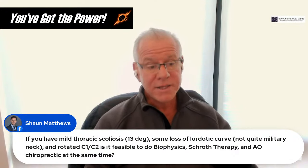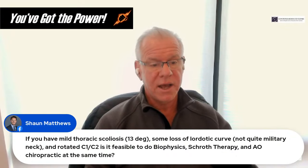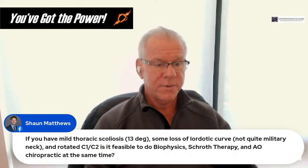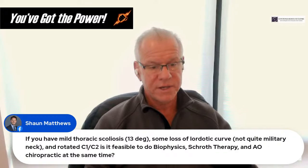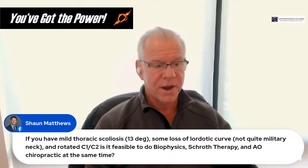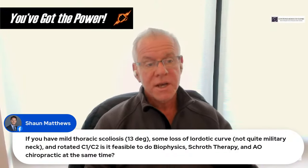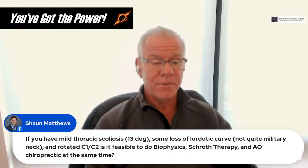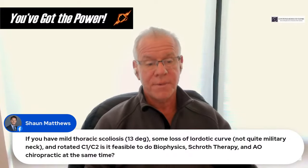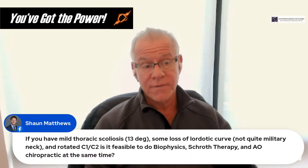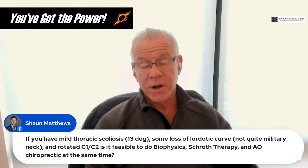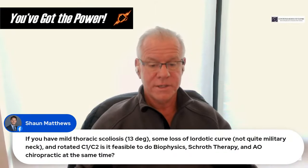For mild thoracic scoliosis at 13 degrees with some loss of lordotic curve and rotated C1-C2: is it feasible to do biophysics correction, Schroth therapy, and AO chiropractic at the same time? That's a lot to do at once. I'd probably focus on Schroth and AO given what's described, since doing all three simultaneously is pretty hard.